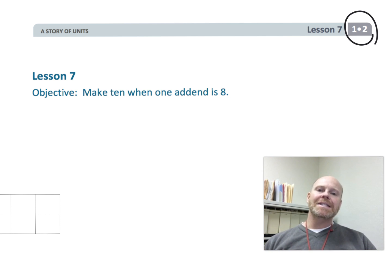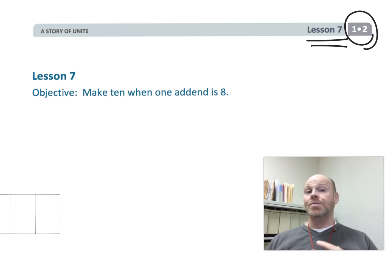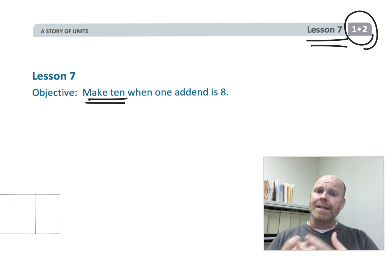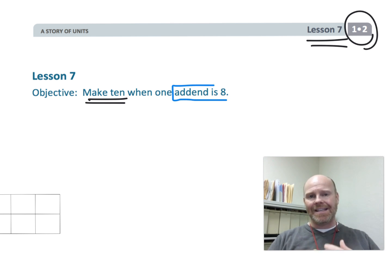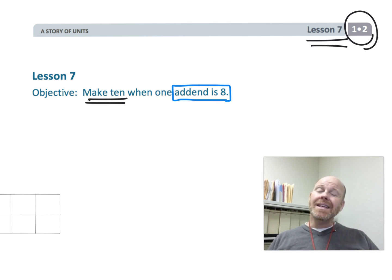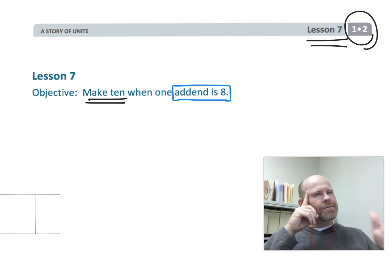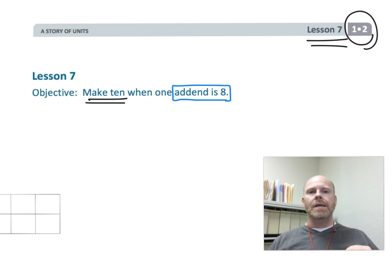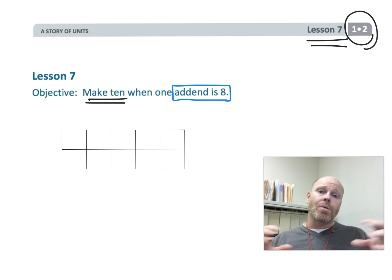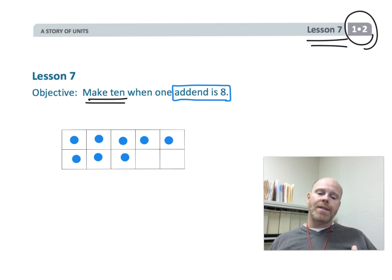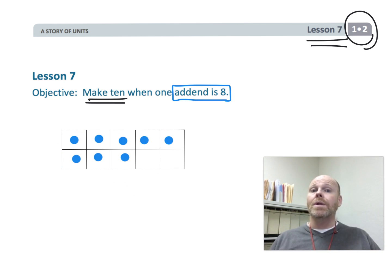This is first grade module 2 lesson 7. In this lesson, students are going to continue making 10, because that's a nice friendly landmark number. Only this time they're going to be doing it when the addend is 8, rather than the previous lessons where the addend was 9. This adds a little bit of complexity because 8 is a little bit further away from that friendly number. I'm going to modify the lesson by incorporating 10 frames so students really have that visual representation.